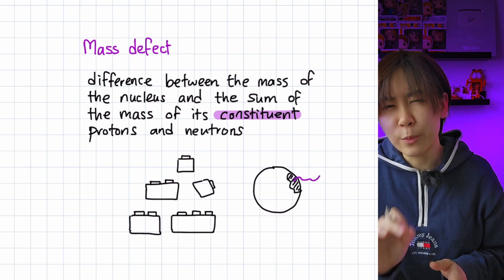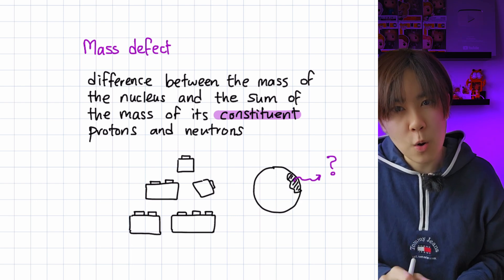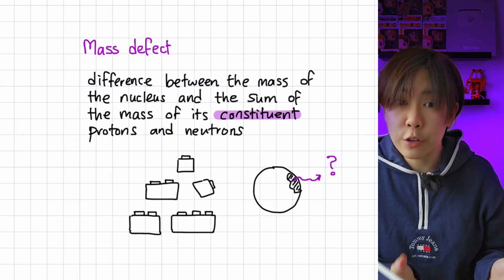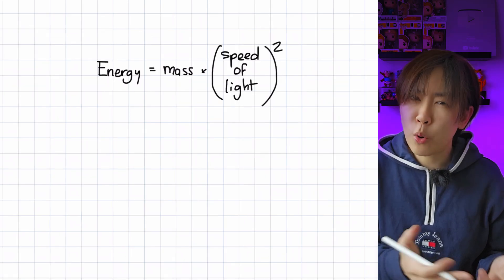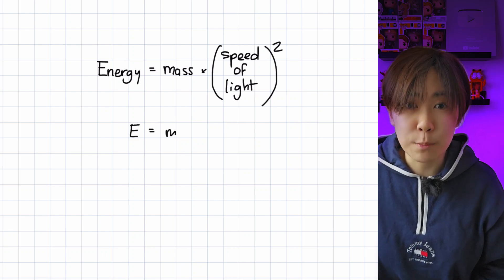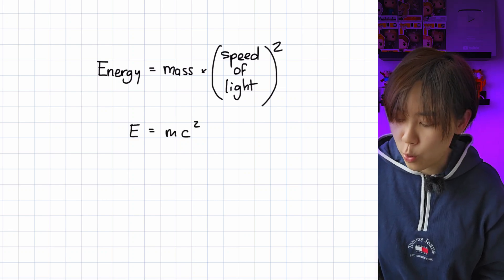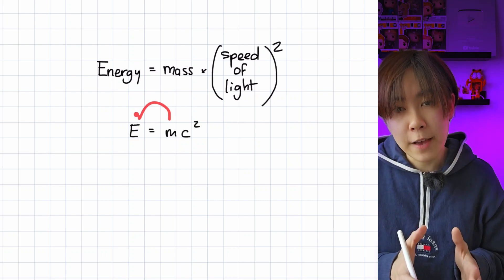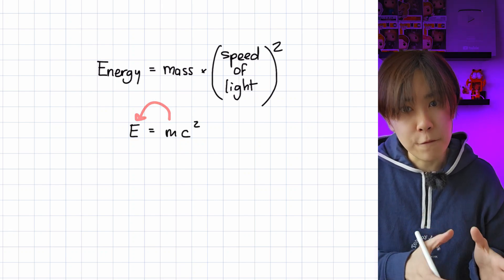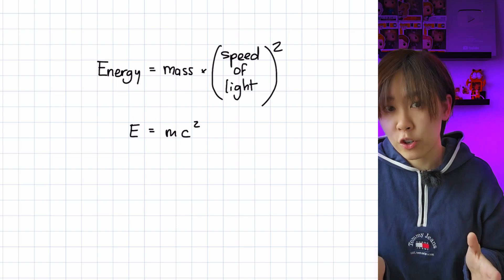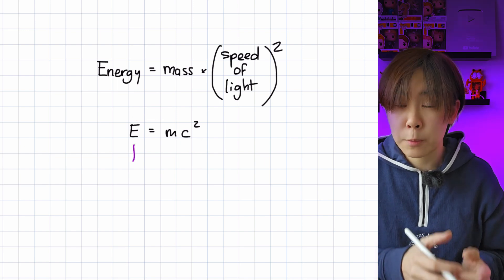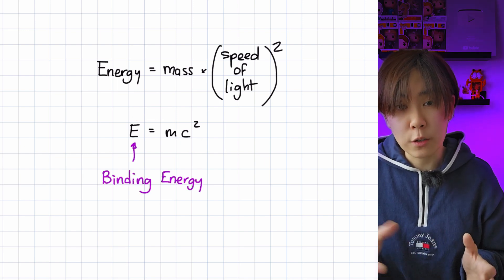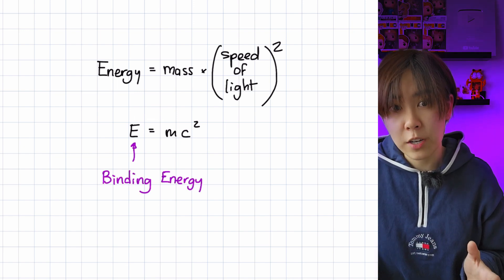But where did that little bit of mass go in the process of building the nucleus? According to Einstein's mass-energy equivalence, the mass defect is converted into energy. Specifically, it's converted into binding energy.